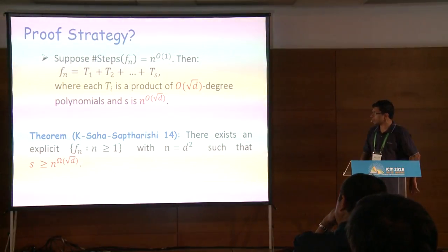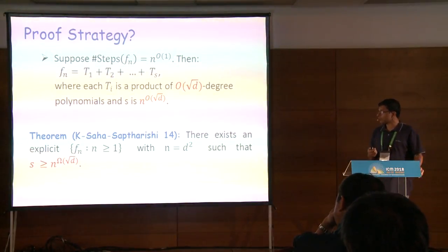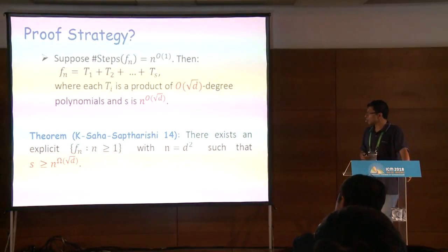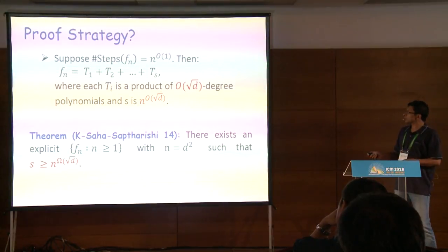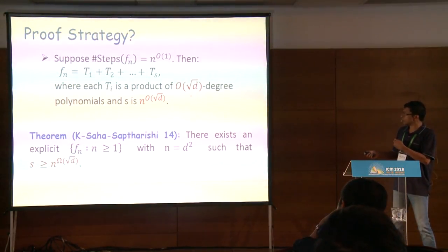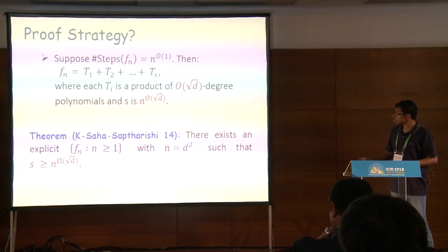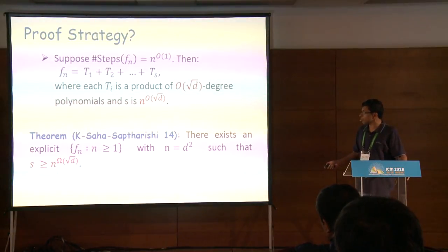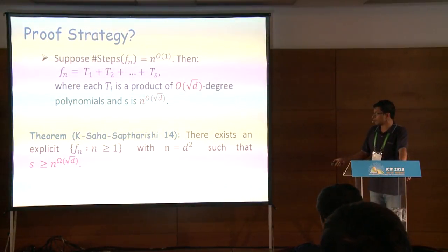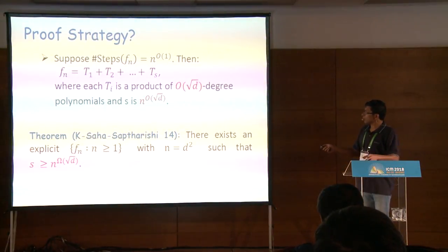We have a theorem that seems to come very close to this. I can give an explicit family of polynomials F, with the number of variables being the square of the degree, such that when you write it as a sum of products of polynomials of degree √d, the number of terms required is n^√d. This seems to come close because if we could beat this n^√d — get something better than √d in the exponent — we would have solved the VP versus VNP problem.